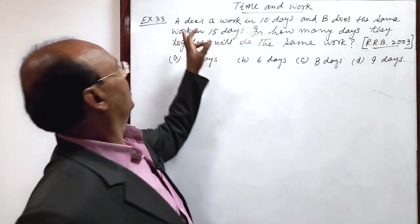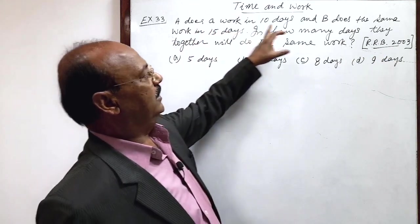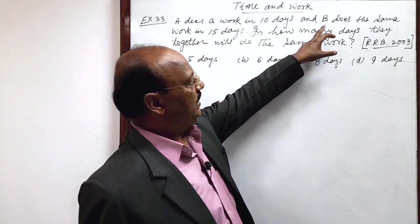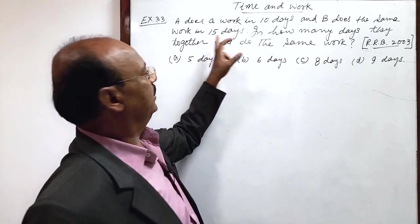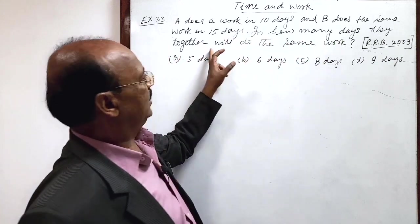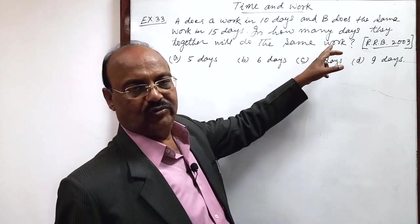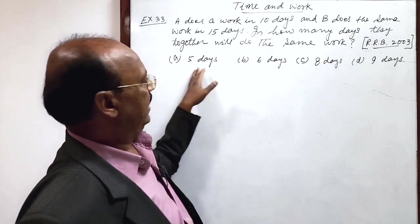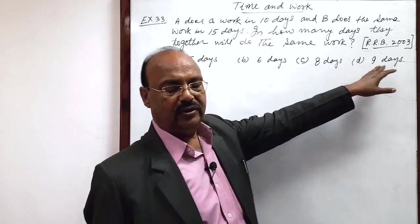Here the question is: A does a work in 10 days and B does the same work in 15 days. In how many days will they together do the same work? Options are 5 days, 6 days, 8 days, or 9 days.